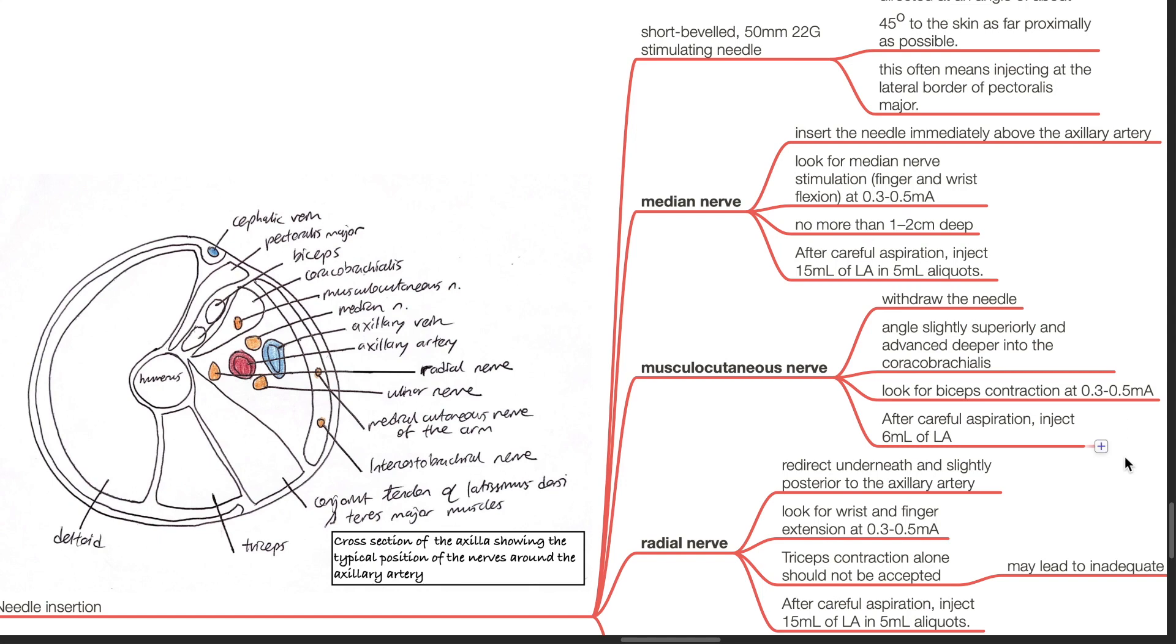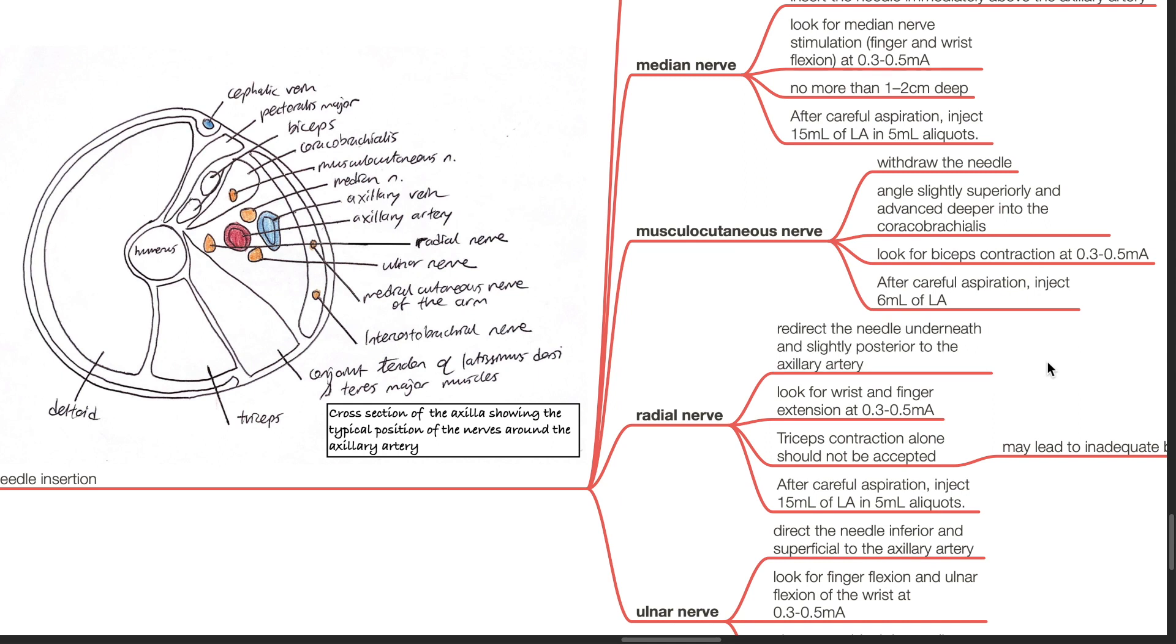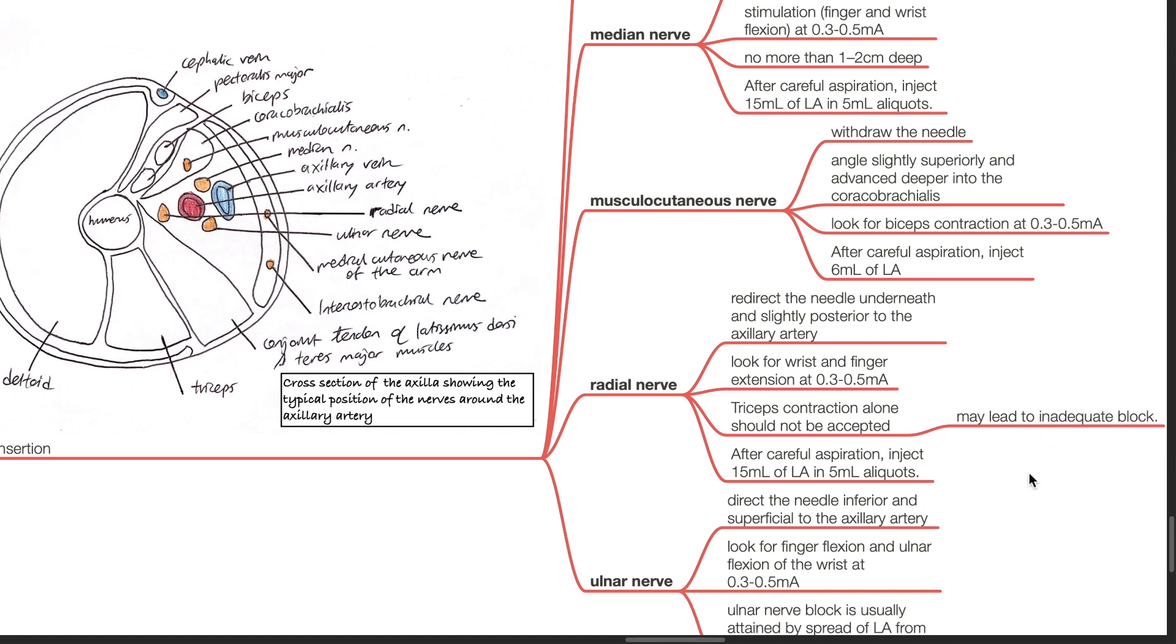To block the radial nerve, redirect the needle underneath and slightly posterior to the axillary artery. Look for wrist and finger extension at 0.3 to 0.5 milliamps. Triceps contraction alone should not be accepted. This may lead to inadequate block. After careful aspiration, inject 15 mL of local anesthetic in 5 mL aliquots.